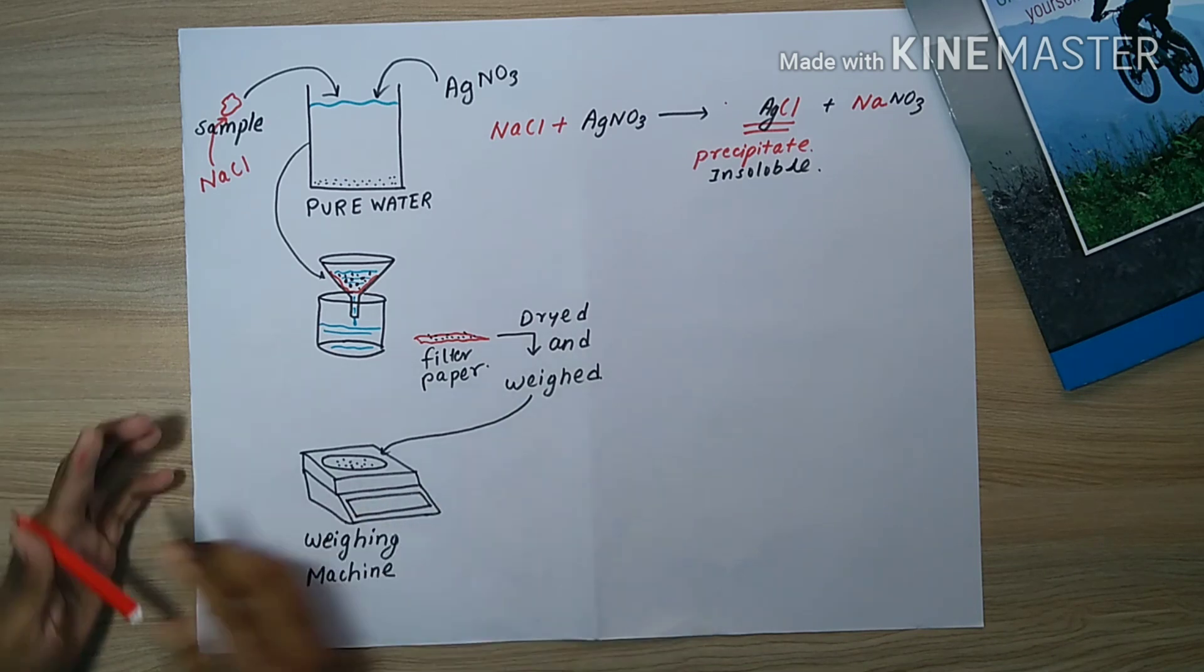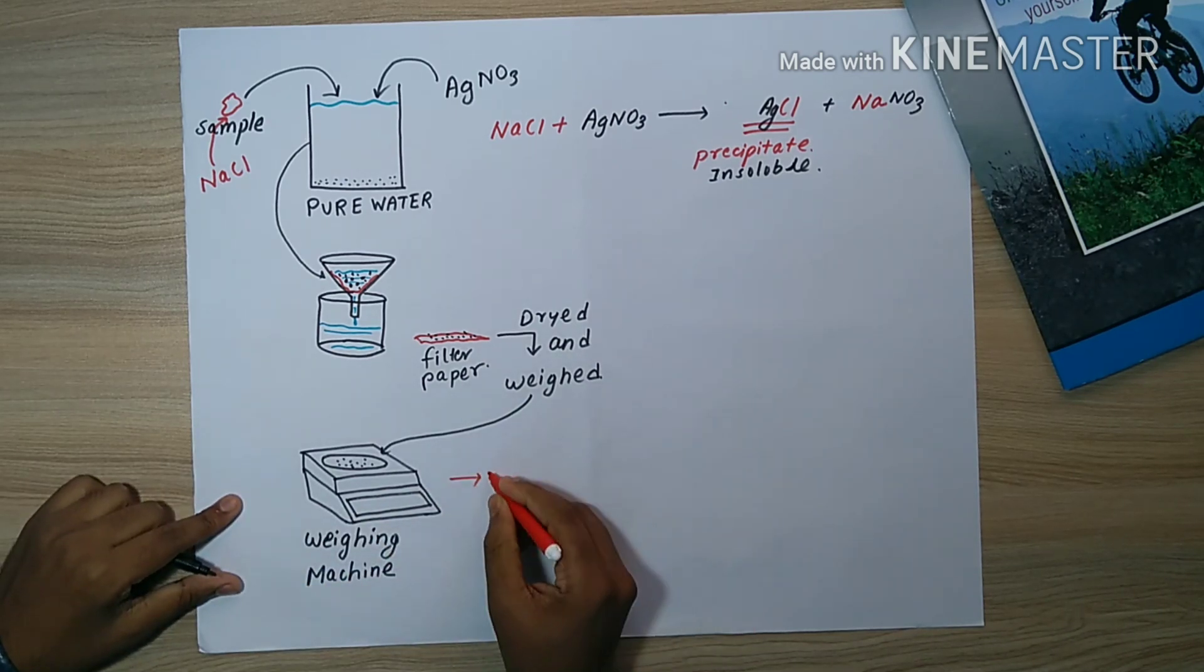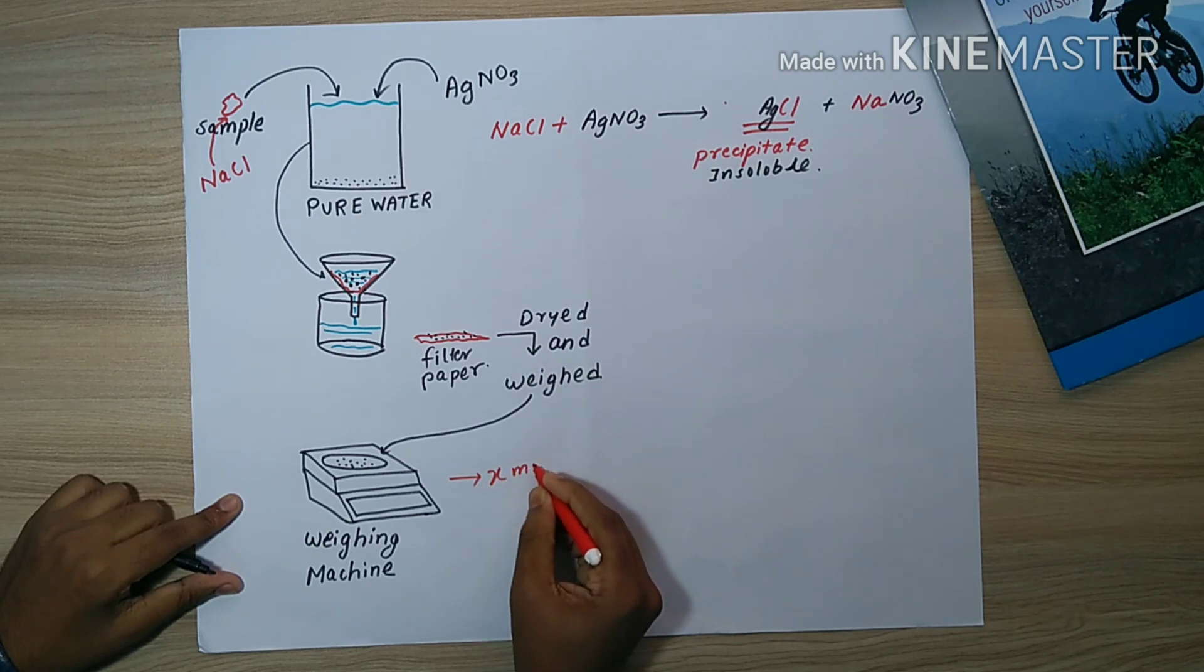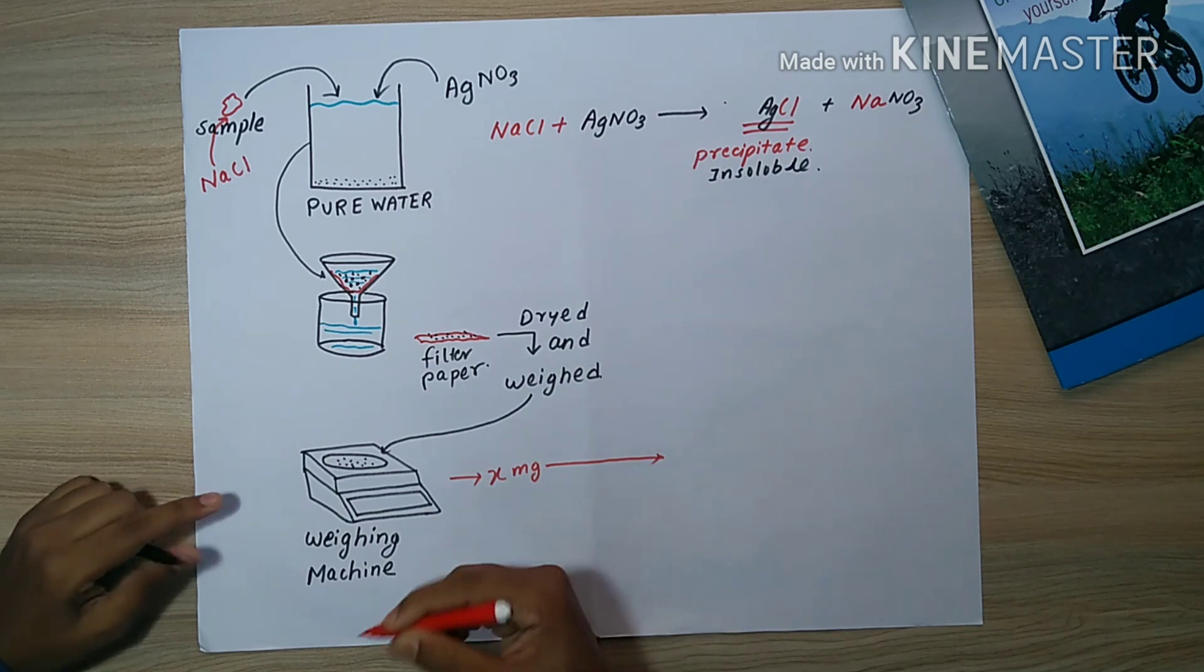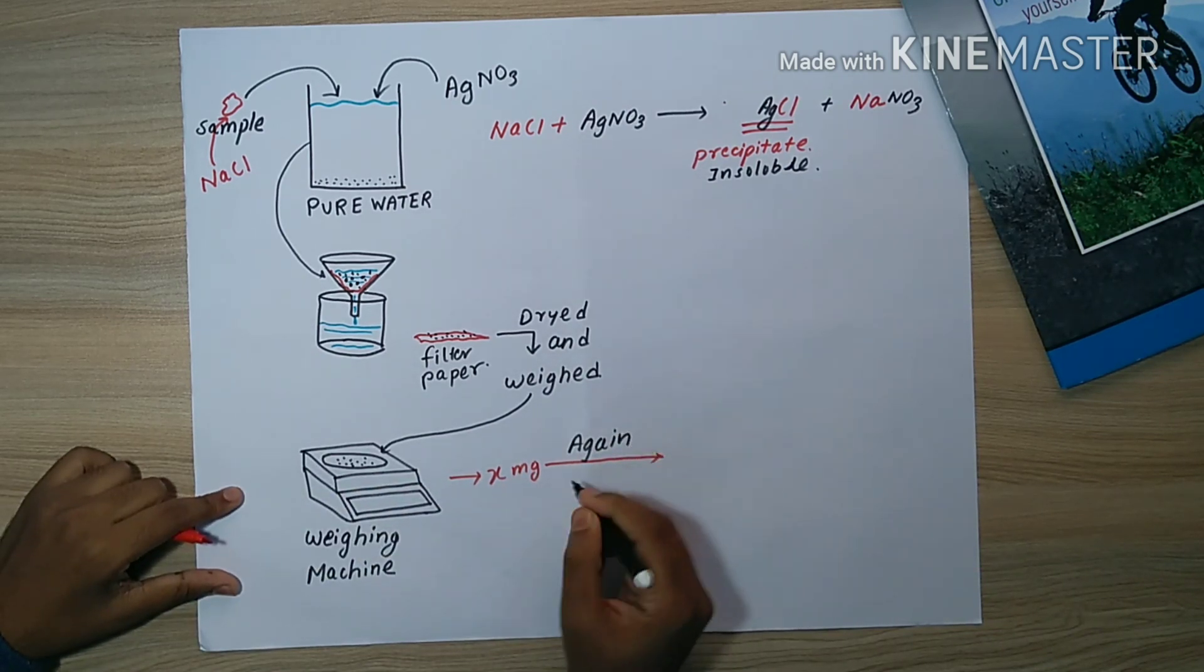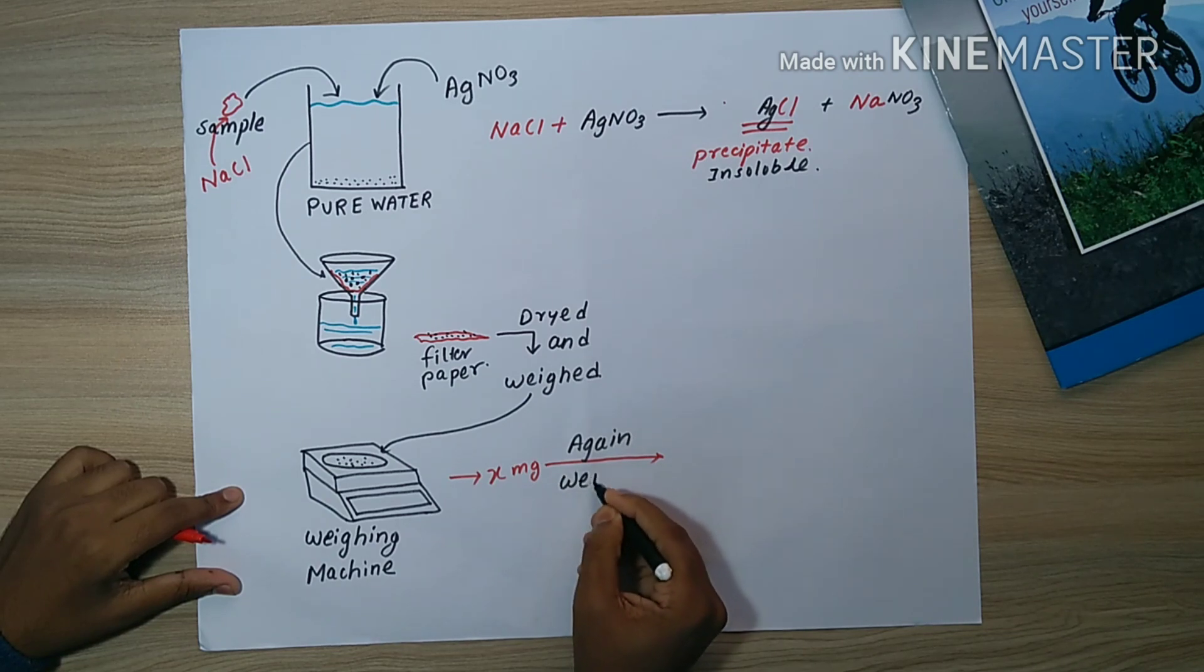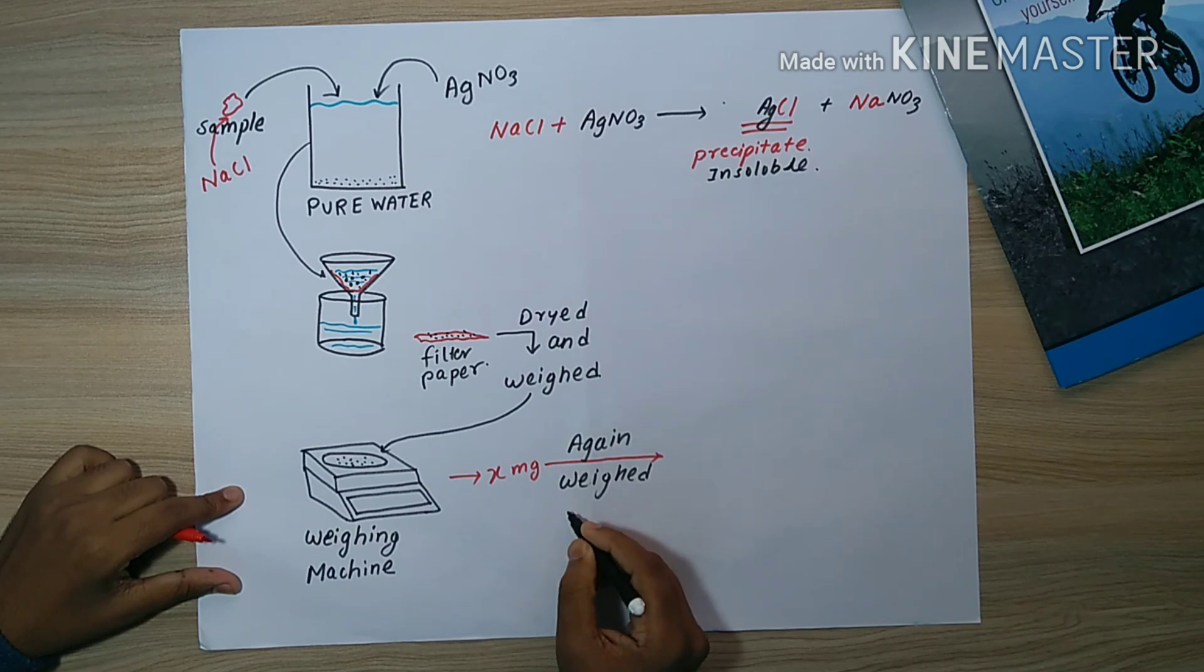On this weighing machine, the precipitate AgCl is weighed. The weighing machine shows suppose x milligrams. This x milligram of precipitate is again dried and again weighed. This repeated process of drying and weighing is done.